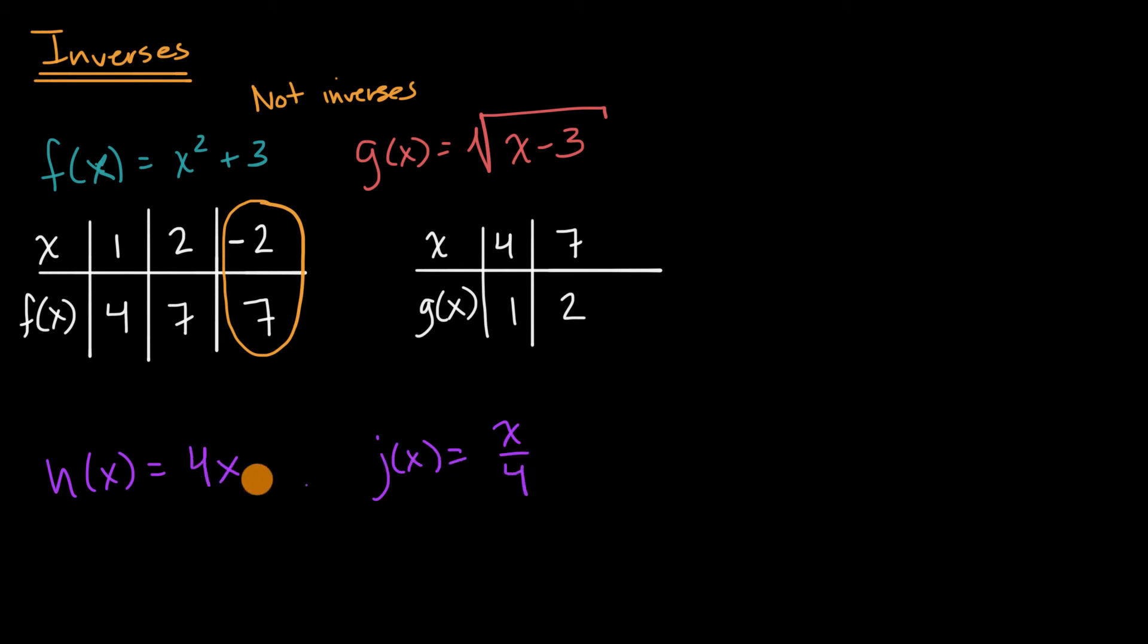We know that these are inverses of each other. We'll prove it in other ways in future videos, but you can't try every single input here and look at every single output and every single input here and every single output. So we need some other technique other than just looking at specific values to prove that two functions are inverses of each other. Although you can use specific values to prove that they are not inverses of each other.